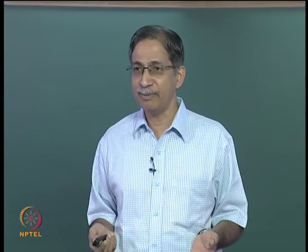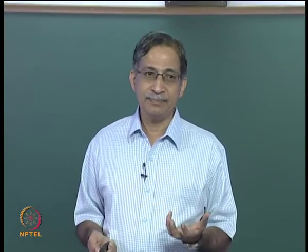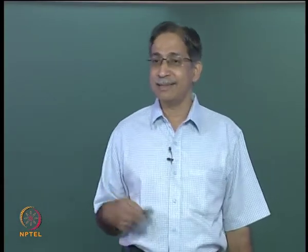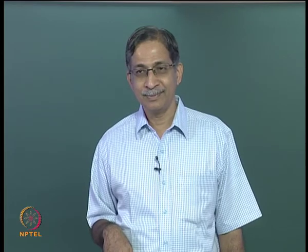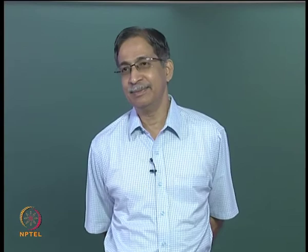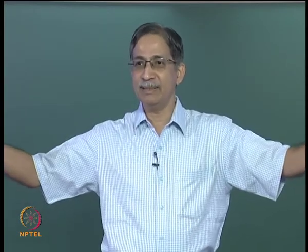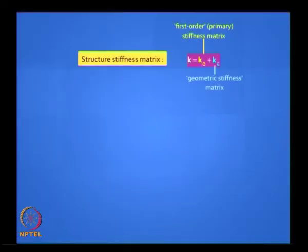We are now ready to solve any problem. If someone gives us a value of P, we just modify the stiffness and do the same old thing. This also gives us a way of finding the critical buckling load. How do you find P critical for a structure? Once you assemble the structure, the structure stiffness matrix is K equals K_O (primary) plus K_G (geometric stiffness matrix for the whole structure). Let us apply equivalent joint loads — apply the loads at the nodes with no moments.